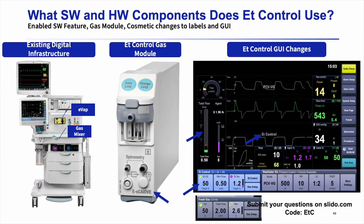What software and hardware components do we use? One of the best things about this is it uses the existing digital infrastructure of an ACES CS2. On an ACES, the software controls the anesthetic agent and the fresh gas — your oxygen — so there's not a lot of hardware changes needed. ACES had all the technological capabilities to do this. The only hardware change needed is a different gas module, where that letter E on the end is related to a safety check we run for ET control. On the software side, there are a couple of visual indications on the screen when you're in end-tidal control: a waveform message, quick keys on the bottom left turn fluorescent blue, and the split screen changes as well. There's still not too much of a jump to learn how to use this.